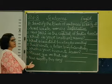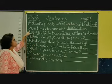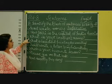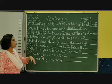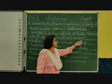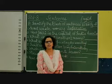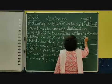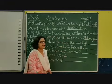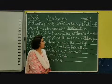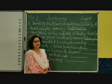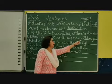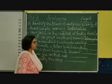Coming to the third one, children: 'What is your brother's name?' As you can see, there is a question mark. You can understand that it is an interrogative sentence. Interrogative — I-N-T-E-R-R-O-G-A-T-I-V-E. Interrogative sentence — at the end you have a question mark.